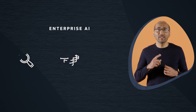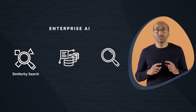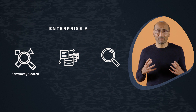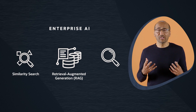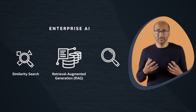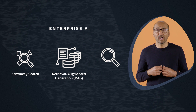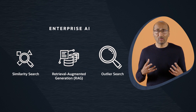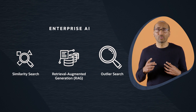There are three types of enterprise AI you need to know about. Similarity search, which finds things that are alike. Retrieval augmented generation, or RAG, which uses information retrieval to enhance content generation. And outlier search, which spots the odd one out.